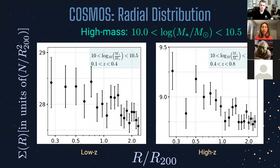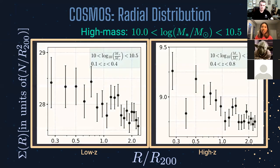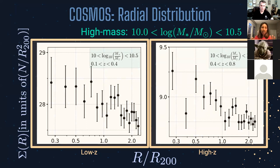For the high mass bin, we again observe that the number density of objects is greater for the low redshift bin than for the high redshift bin, which is expected. We also observe that the overdensity signal of objects near the center of the host halo increases for both datasets, signifying the presence of satellites. Then beyond one R200 we see it sort of die down. With these radial distributions, we can now model this combined satellite and background signal to obtain a satellite luminosity function.